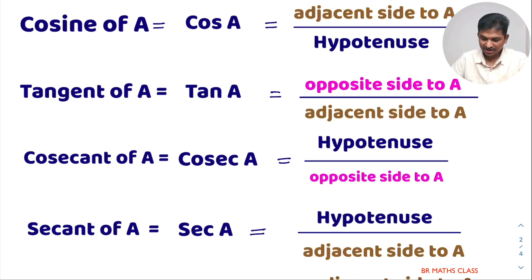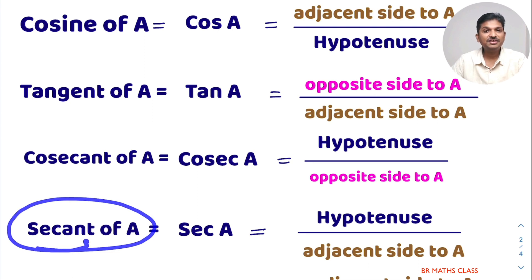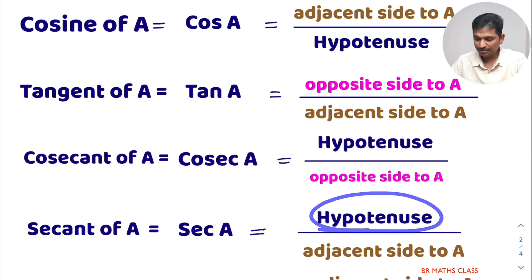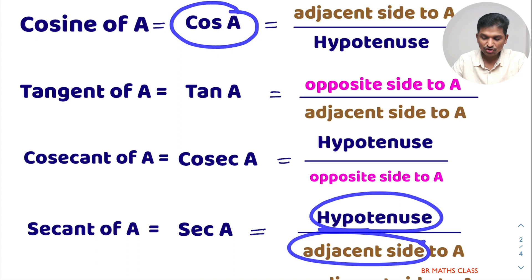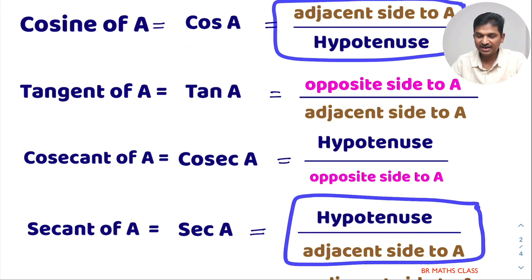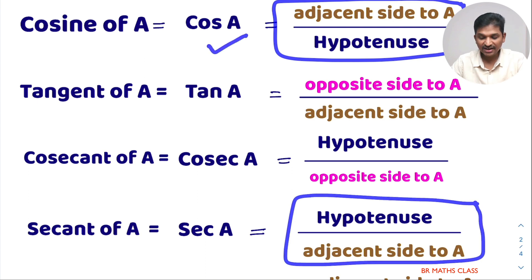The next trigonometric function is secant of A, simply called sec A. Secant A is defined as hypotenuse divided by adjacent side. Secant A is the reciprocal of cos A — cos A is adjacent by hypotenuse, and sec A is hypotenuse by adjacent side. So if you memorize cos A, you can write secant A very easily as its reciprocal.